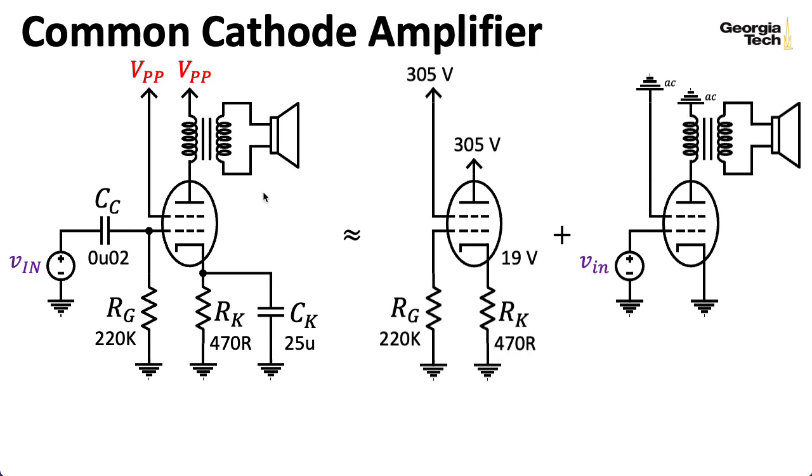One thing I should mention is that the kind of transformer you need for a single ended output stage like this is a special kind of transformer that includes an air gap, and that allows the transformer to handle the DC current flowing through here, that bias current, without saturating. So that adds significantly to the cost of the transformer. The kind of transformer you use in a push-pull amplifier doesn't need that. We'll look at push-pull amplifiers in a future lecture.